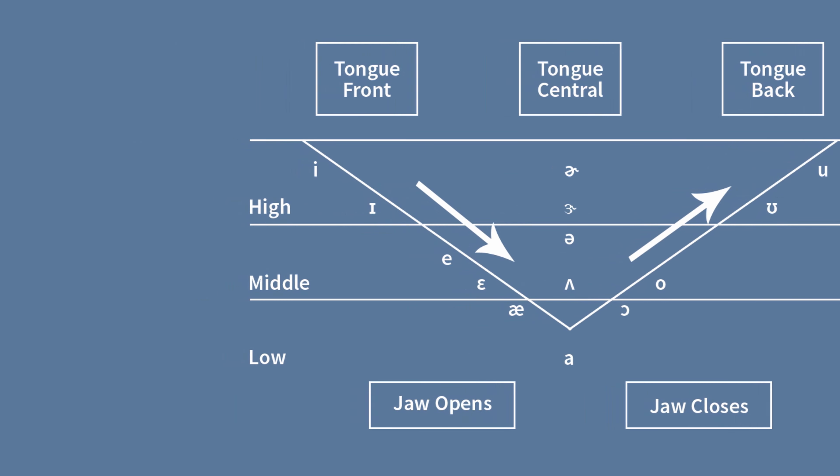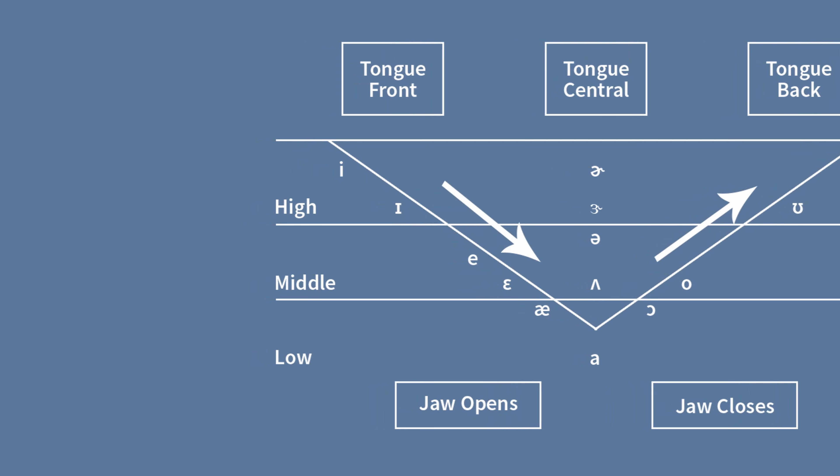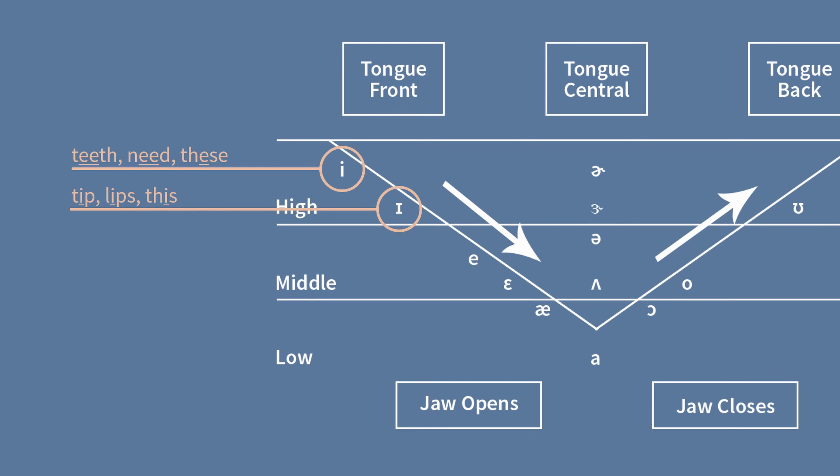Let's go through each of the vowel sounds in the triangle along with some examples. E, eat, need, these. I, tip, lips, this.